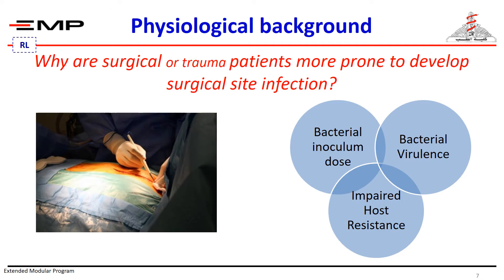Why are surgical or trauma patients more prone to develop surgical site infection? Several factors interact to determine whether bacteria inoculated into a surgical wound would cause wound infection or not: the host immune response, the dose of bacterial inoculum, and the bacterial virulence.